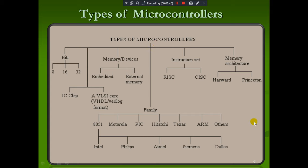With respect to family, there are many families: 8051, Motorola, PIC, Hitachi, Texas Instruments, ARM, and others. Under 8051, many vendors manufacture chips — Intel, Philips, Atmel, Siemens, and Dallas. In our curriculum and lab, we use Atmel 8051. With respect to instruction set, it may use RISC (Reduced Instruction Set) or CISC (Complex Instruction Set). Regarding memory architecture, it may use Harvard or Princeton (Von Neumann) architecture.